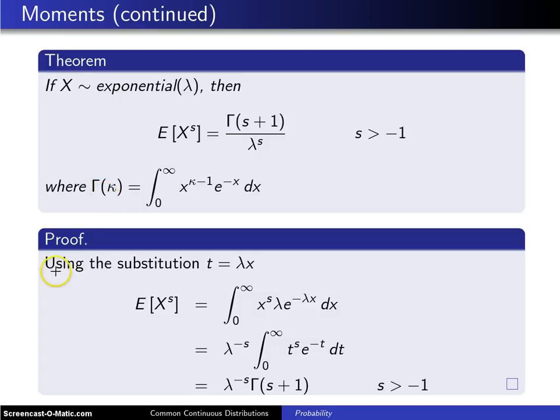Here is the proof and in this proof, there is going to be a substitution used to work an integral and that substitution will be t equals lambda times x. So to start things out, the expected value of x raised to the s power, which is the quantity of interest will be the integral because the exponential is continuous over its support, which goes from zero to infinity of x to the s multiplied by the probability density function f of x dx.